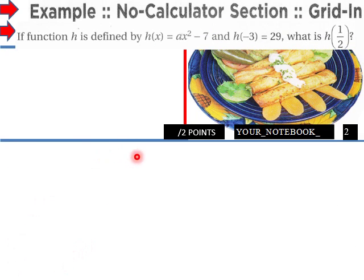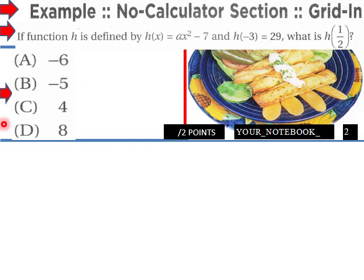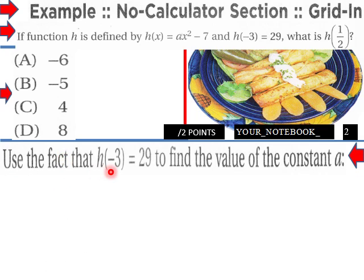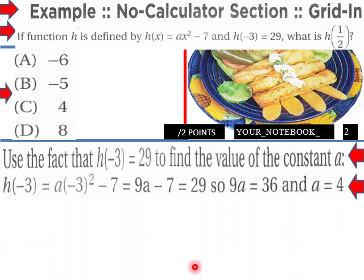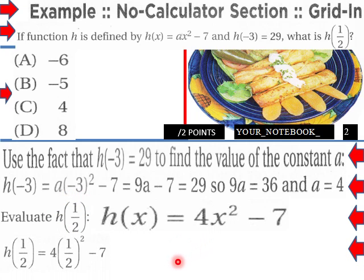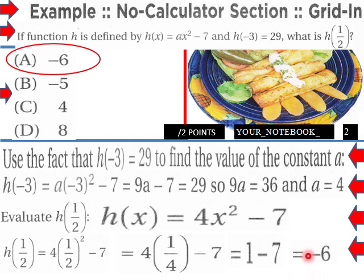Example, no calc section here, grid in. Function h is defined by this here and h(-3) equals that. What is h(1/2)? Here are our possible solutions. Use the fact that h(-3) equals 29 to find the value of the constant a. When you plug that into the original function, 9a equals 36 and a would equal 4. Then evaluate h(1/2), we plug that in here, equals 4 times 1/4 minus 7, 1 minus 7 equals negative 6. So h(1/2) would be negative 6.